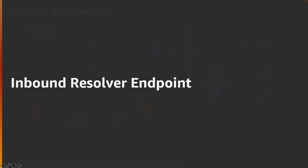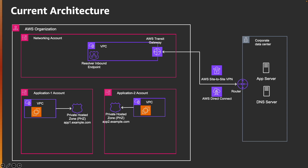We'll start with the inbound resolver endpoint. Here we have a simple architecture where on-prem is connected to AWS via either site-to-site VPN or Direct Connect. We have a networking account for all our networking needs with a VPC in that, and then we have two applications running in separate application account one and application account two. My corporate data center applications need to resolve to these applications. For that, we associate our private hosted zones created in these two application accounts with my networking account VPC, and update our DNS server saying that any requests for app1.example.com and app2.example.com should go to my resolver inbound endpoint.